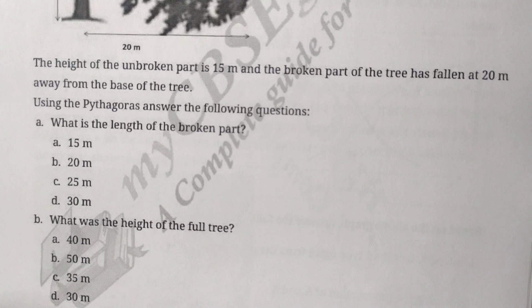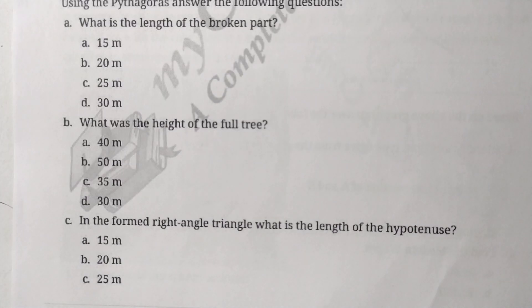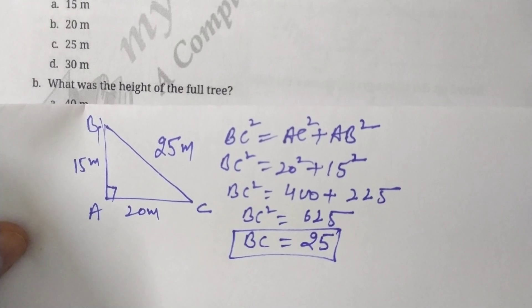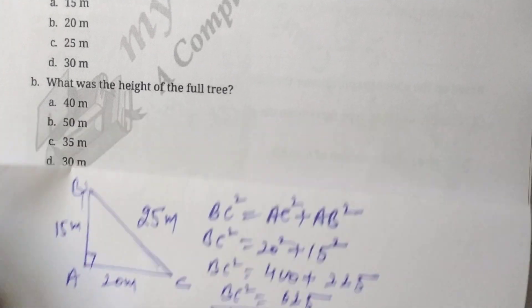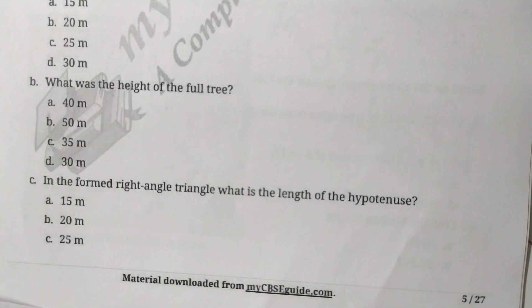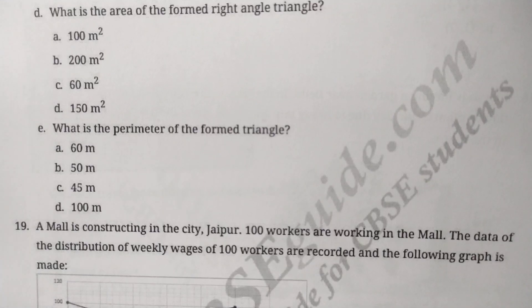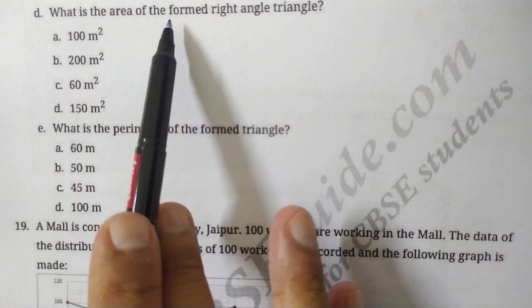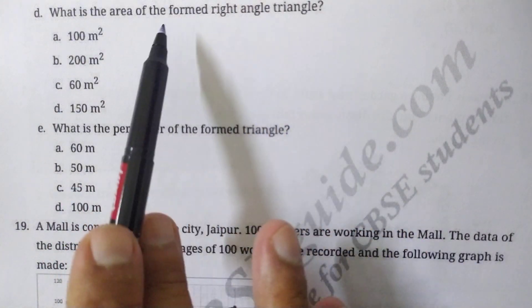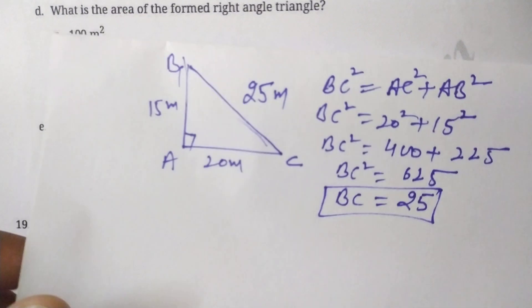Next question: in the formed right angle triangle, what is the length of the hypotenuse? The length of the hypotenuse is 25 meters. Fourth part: what is the area of the formed right angle triangle?